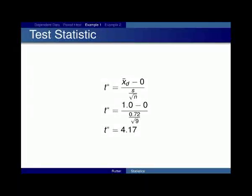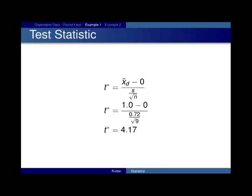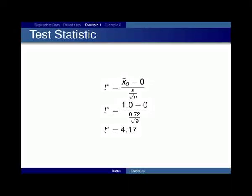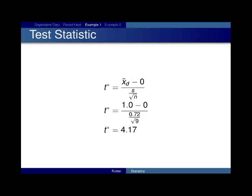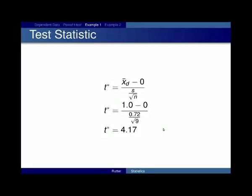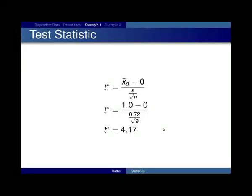Now, you just do a one-sample t-test with that set of data. So, you calculate the test statistic. It's x bar d, the mean difference, minus the null hypothesis, which is 0 all the time, divided by s over the square root of n. You plug in the values, and you get a test statistic of 4.17, just like we did on the homework you handed in before Thanksgiving break.